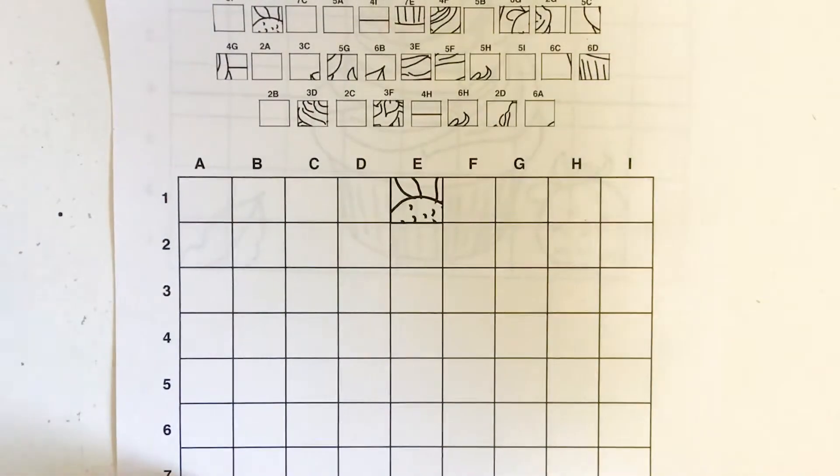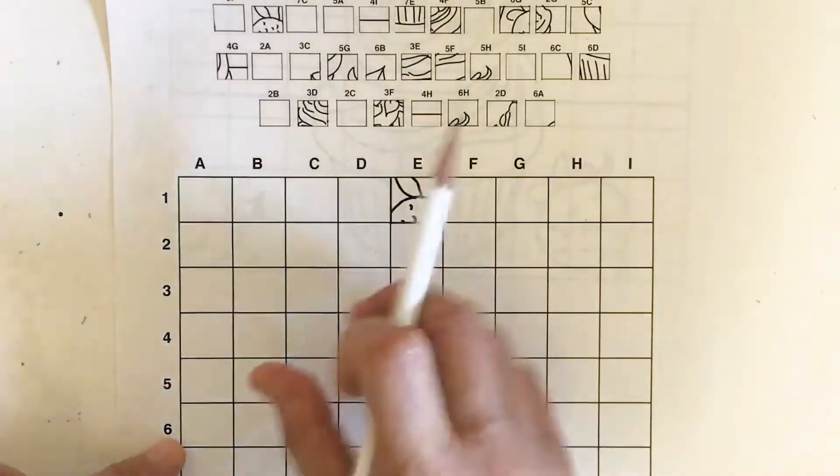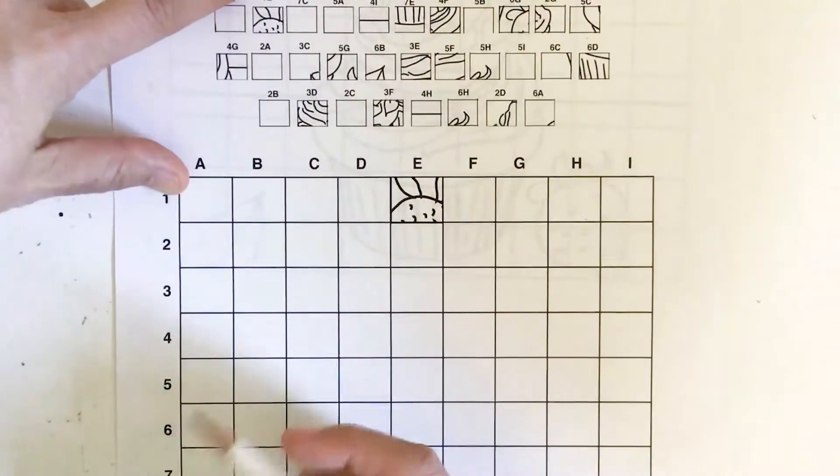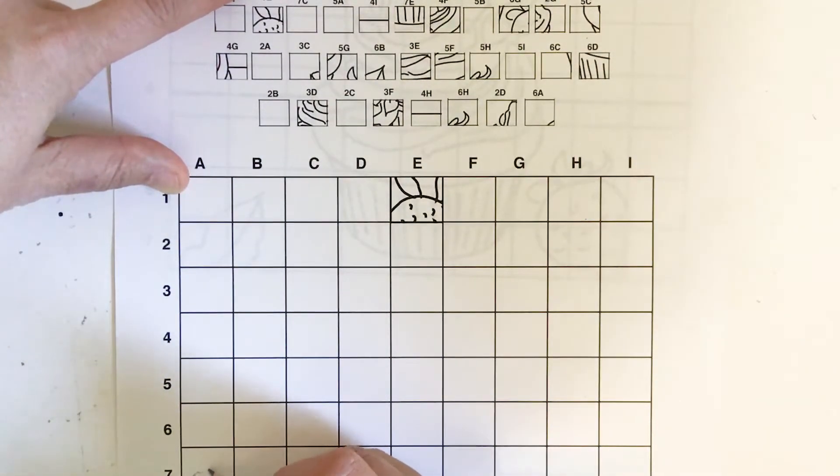I recommend drawing lightly. Start with a pencil, and I know 7A looks like this, so I'm going to go in and sketch in lightly 7A.